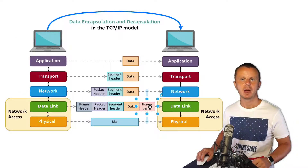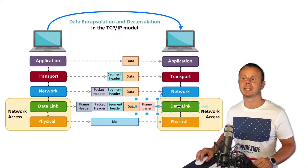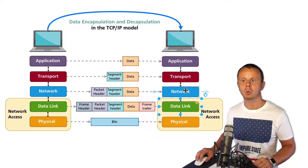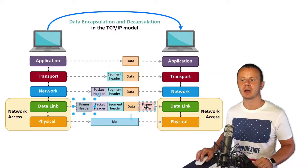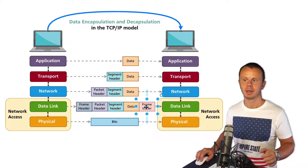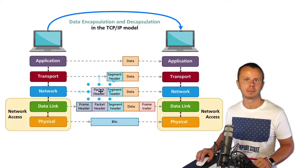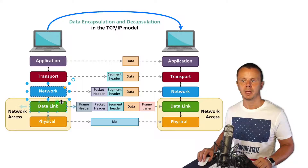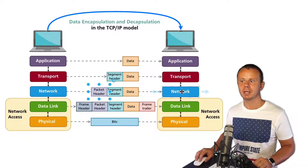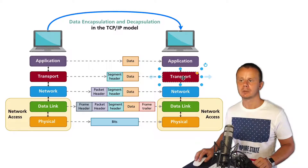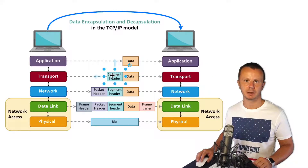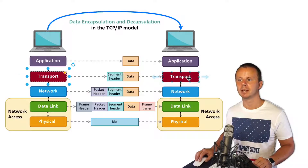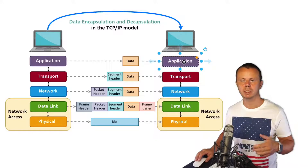After processing the frame at the data link layer on the recipient, it goes to the network layer — but now without the frame header and frame trailer, which are stripped off. The network layer reads the packet header that was added by the sender's network layer, removes it, and sends the data to the transport layer. The transport layer reads the segment header added by the sender's transport layer, and afterwards the data goes to the application layer.